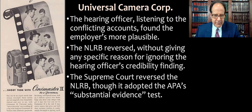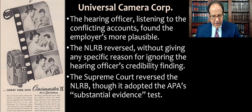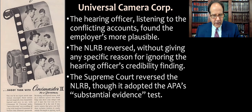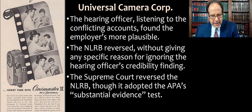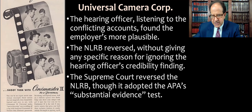Most of the time, these agencies — these boards and commissions — just sign off on what their administrative law judges and hearing officers decide. But sometimes they have a contrary agenda. Maybe the board or commission, because they're presidential appointees, has become politicized, or maybe they have their eye on a particular hearing officer for being a softy. The NLRB actually reversed its own hearing officer without giving a specific reason for ignoring the hearing officer's credibility finding — they basically just reached the opposite conclusion. The Supreme Court then reversed the NLRB and reinstated what the hearing officer had found, while adopting the APA's substantial evidence test for these types of cases.